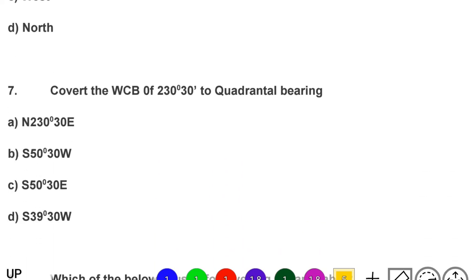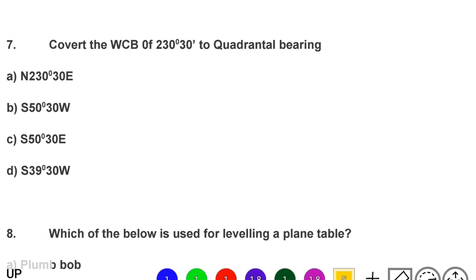Next question: convert the WCB of 230°30' to quadrantal bearing — option A: N 230°30' E, option B: S 50°30' W, option C: S 50°30' E, option D: S 30°30' W. The correct answer is option B, south 50°30' west.